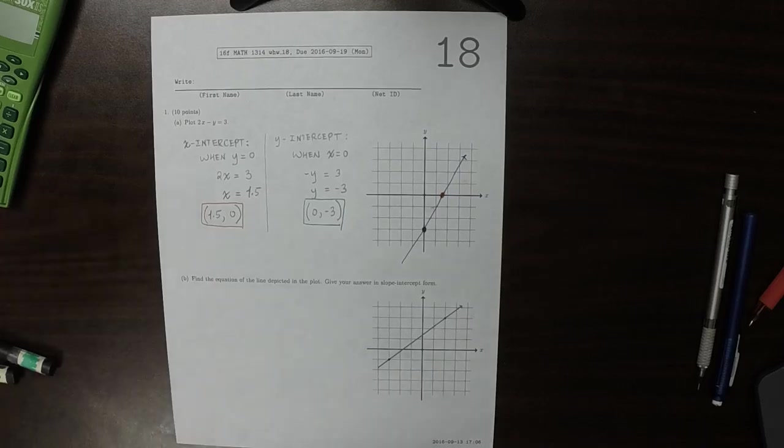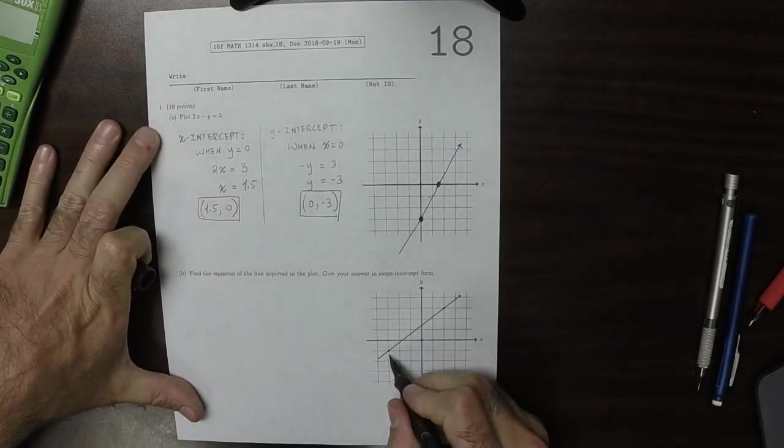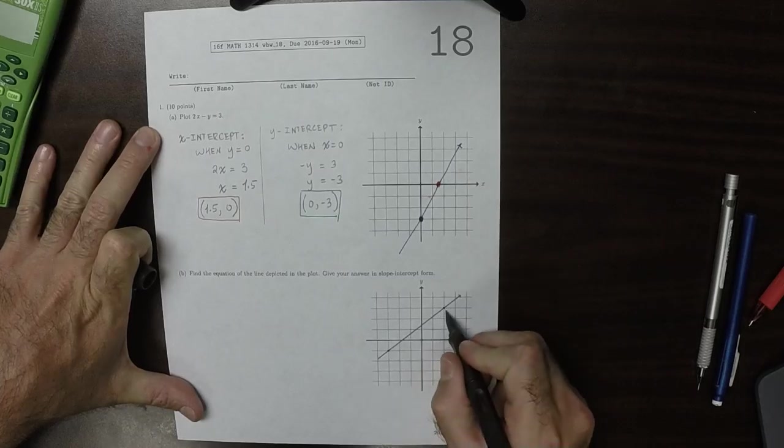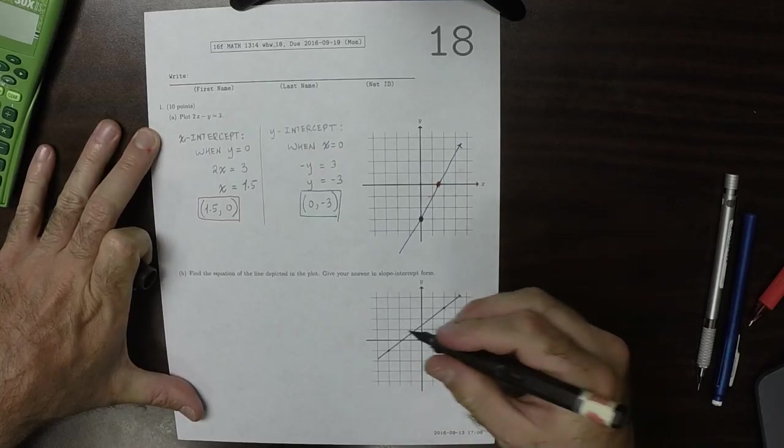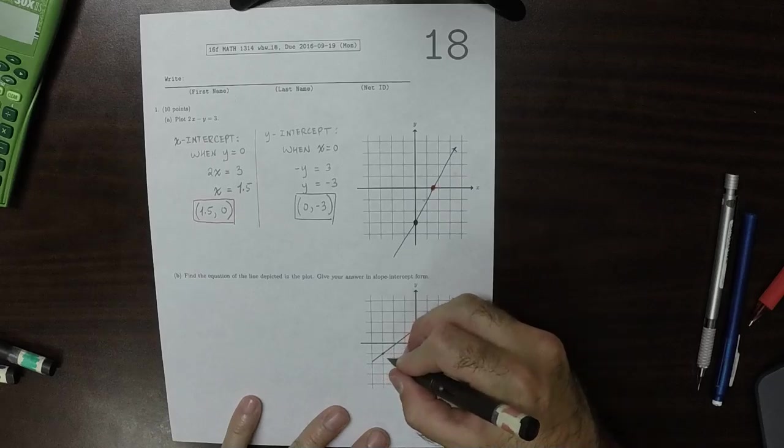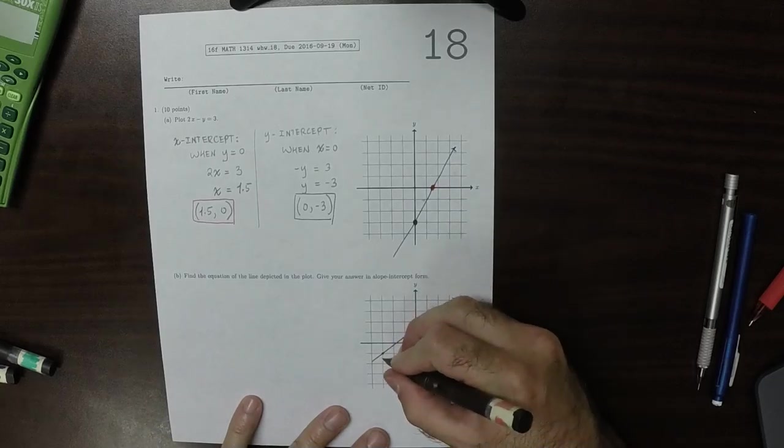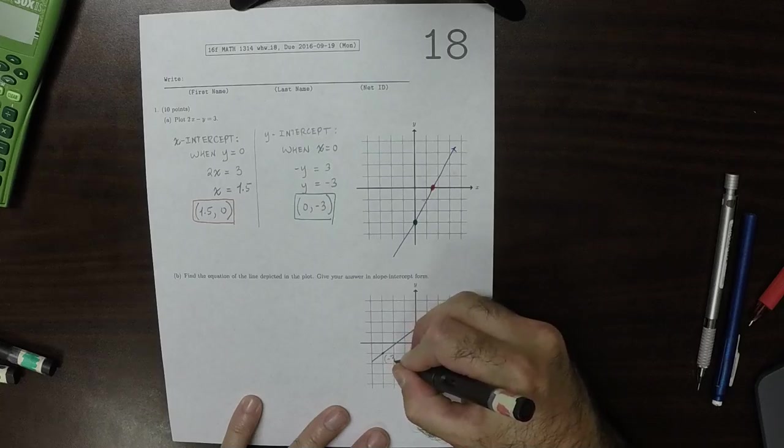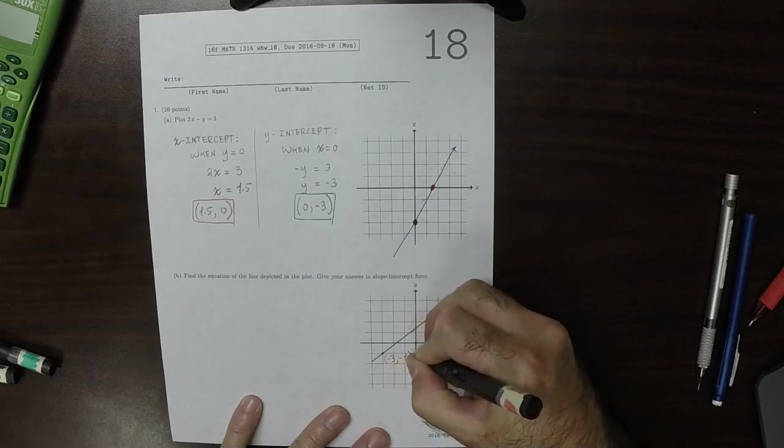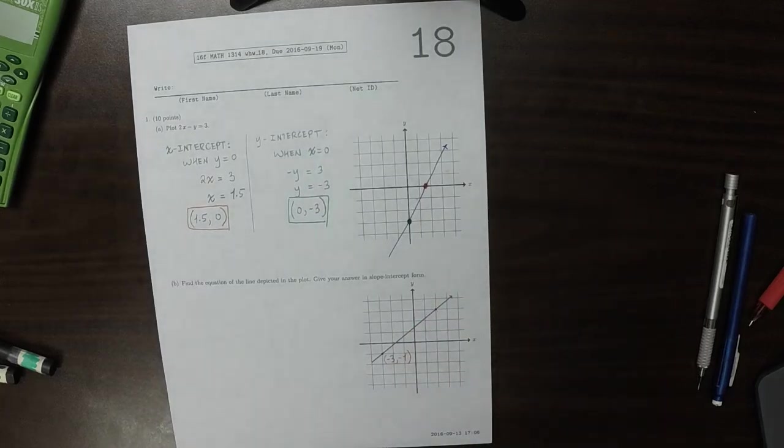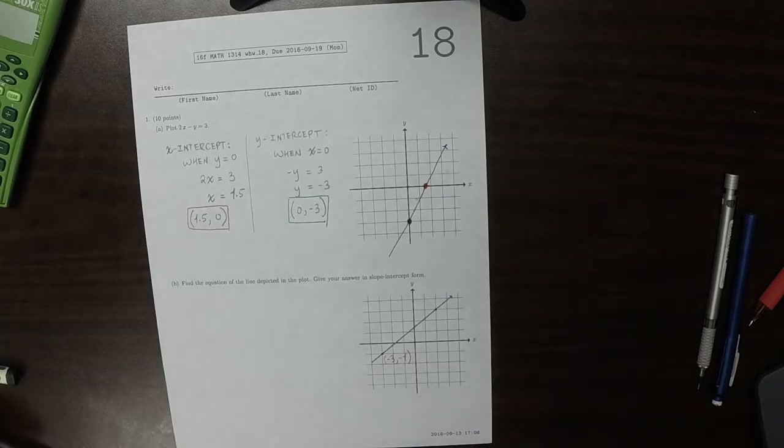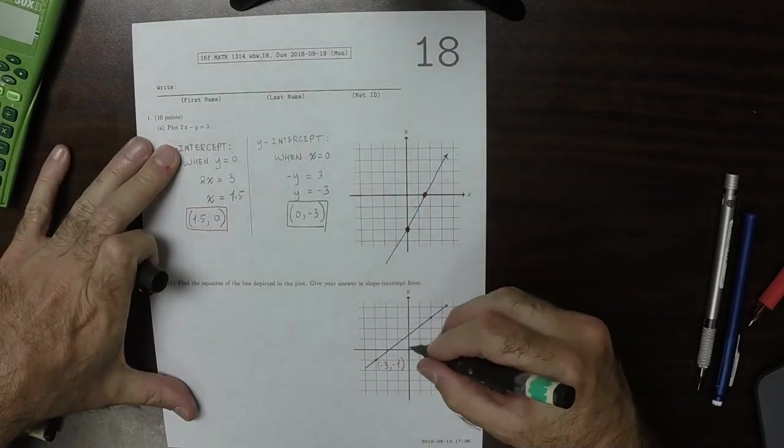Okay. So hopefully, the plot has two points on it that are marked out. So here is the point negative 3, negative 1. So this is point negative 3, negative 1. And this is point 2, 3.